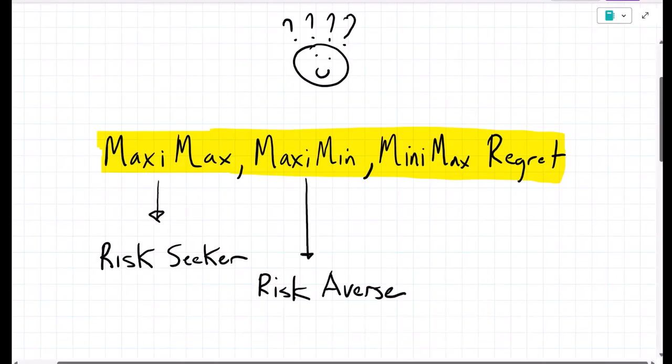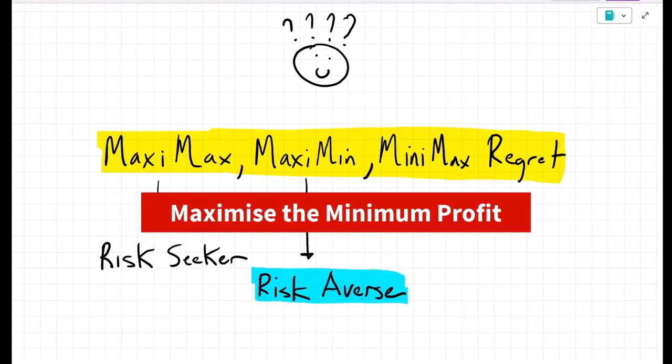Let's now look at the risk averse decision-maker. This manager is going to assume the worst-case scenario. What's the worst possible outcome? And then they're going to choose the best option from the worst-case scenario. The risk-averse decision-maker will ignore the upside of risk.